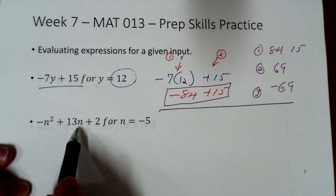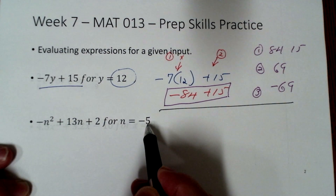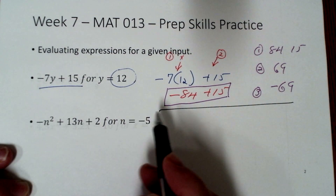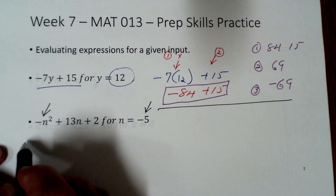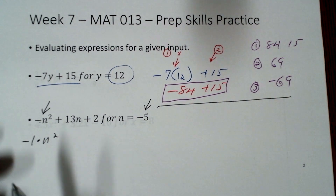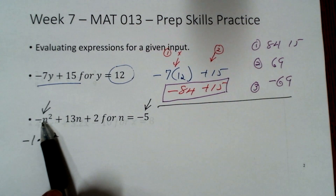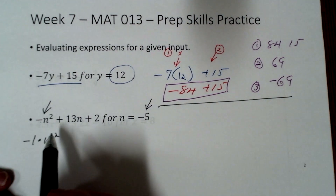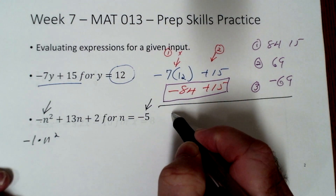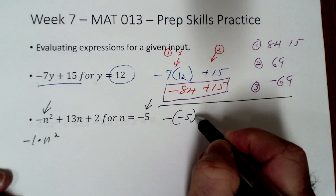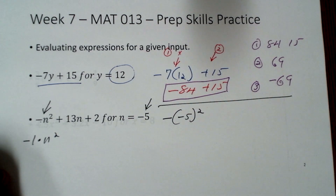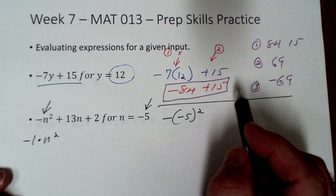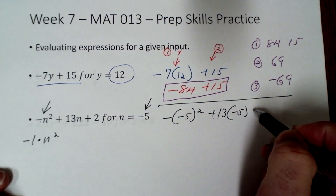Next: negative n squared plus 13 times n plus 2, where n equals negative 5. Everywhere we see n, we insert negative 5. One thing to notice: there's already a negative sign in front of the n. Technically that is negative 1 times n squared — mathematicians imply the 1 is there. So we write negative 1 times negative 5 to the second power, plus 13 times negative 5, plus 2.